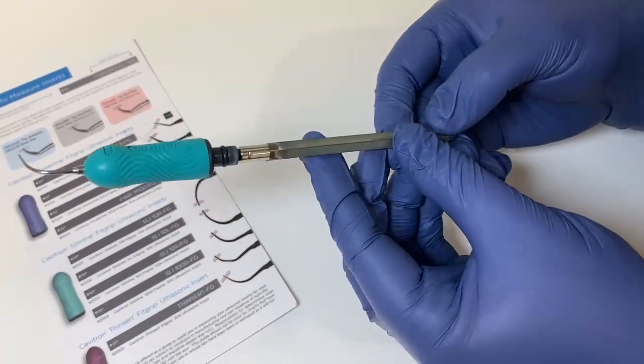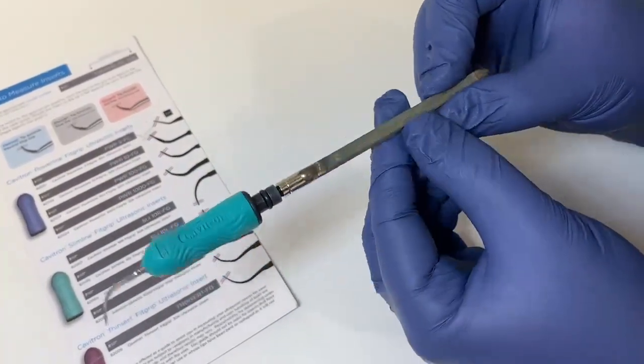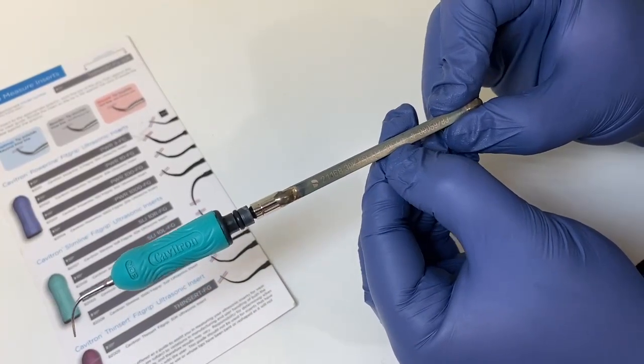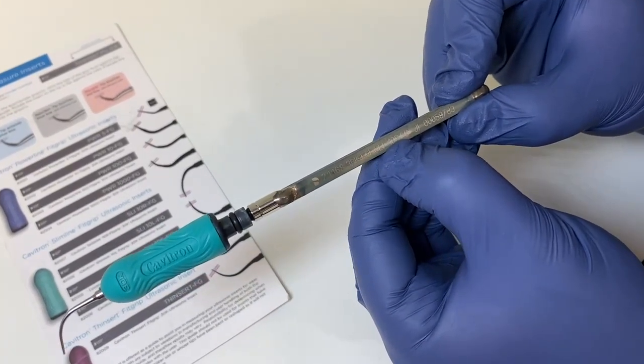Another thing that's kind of interesting about an insert are all these different numbers. They tell you what the instrument insert name is. So if I look right here, it's a 10S Slim SLI.